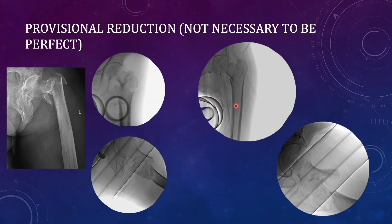The first step is provisional reduction. We use a fracture table to reduce the fracture — you must be aware of the reduction maneuvers required for putting the limb on the fracture table. The commonly used method is traction while looking for matching cortices whenever visible. For example, this is a comminuted trochanteric fracture in which the greater trochanteric fragment, the lesser trochanteric fragment, and the lateral wall are all fractured.